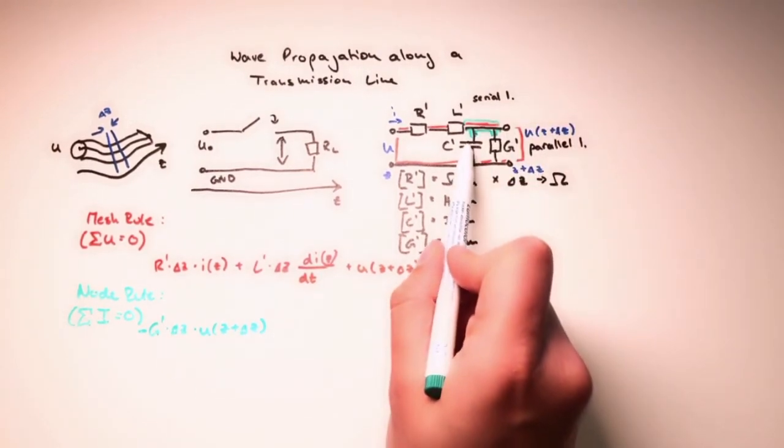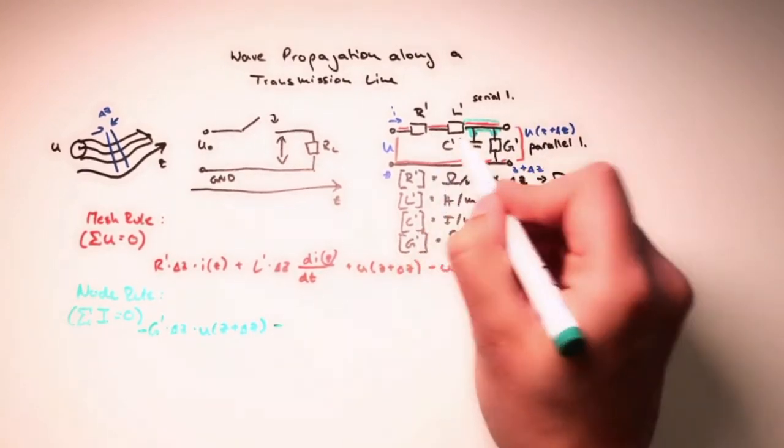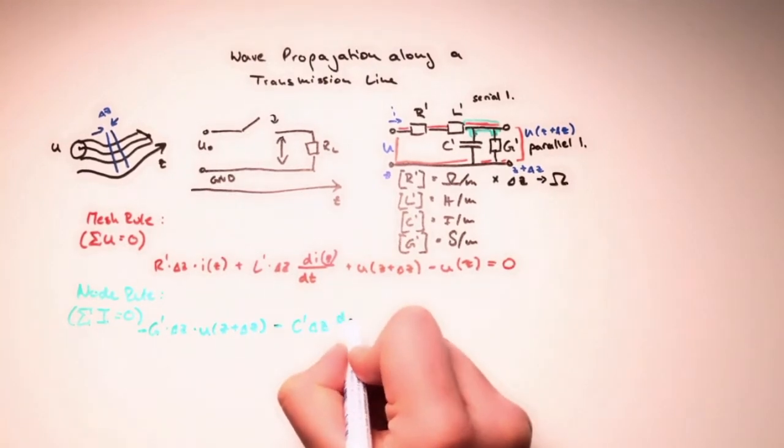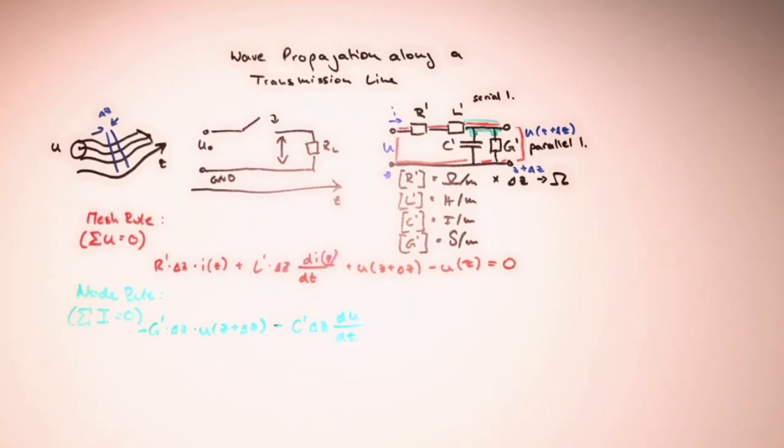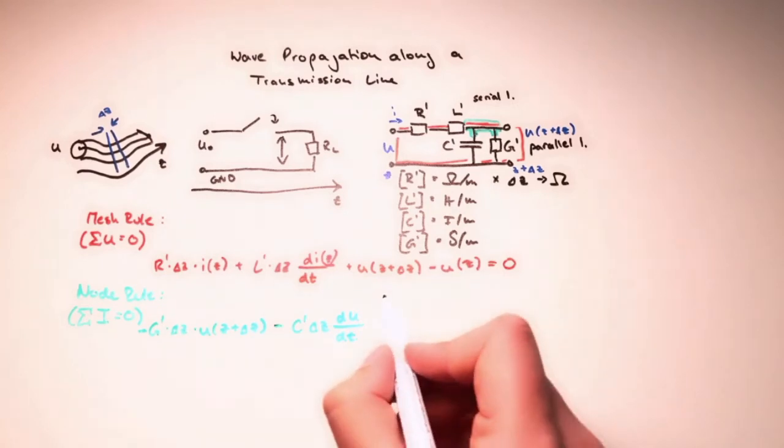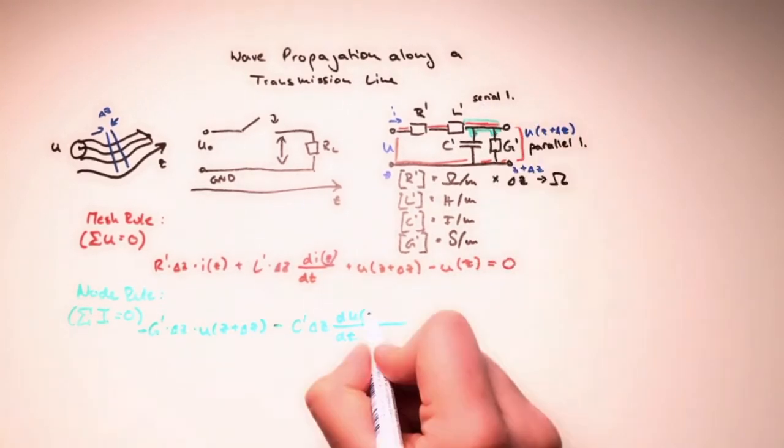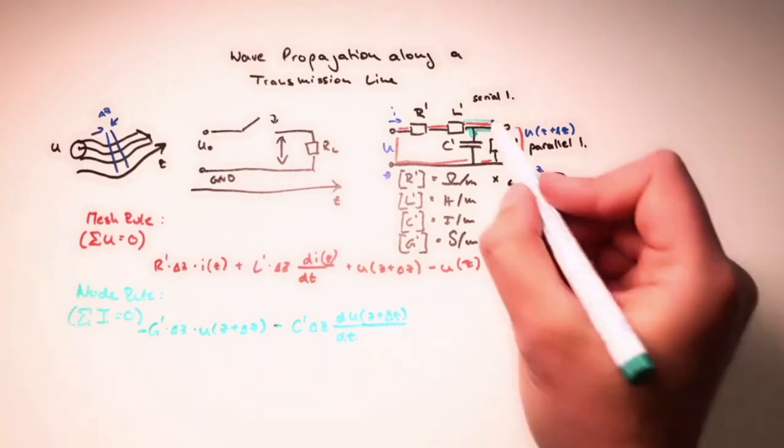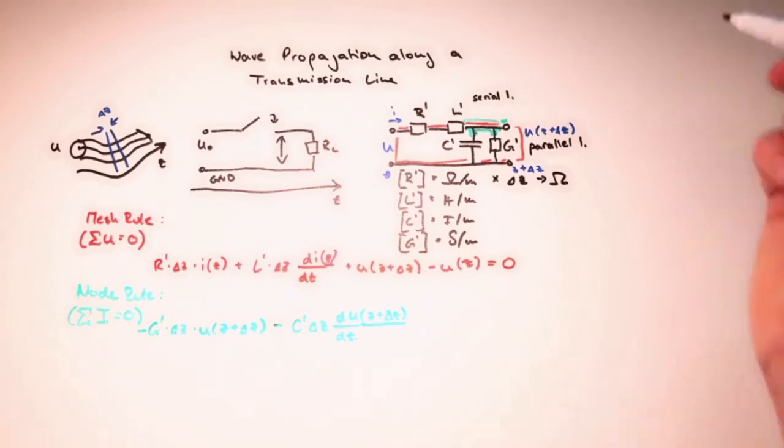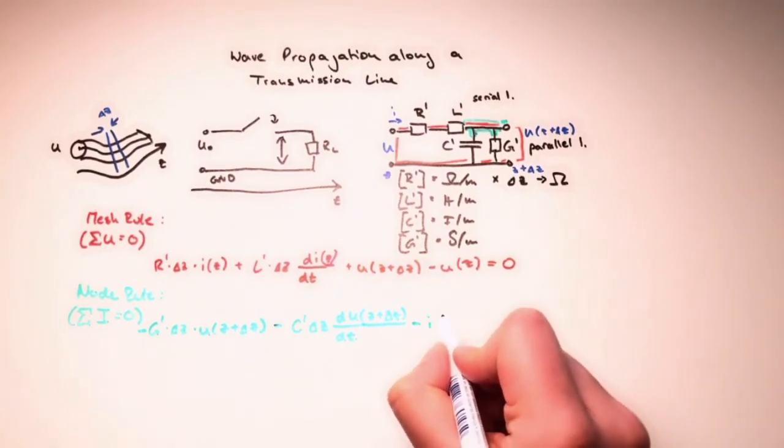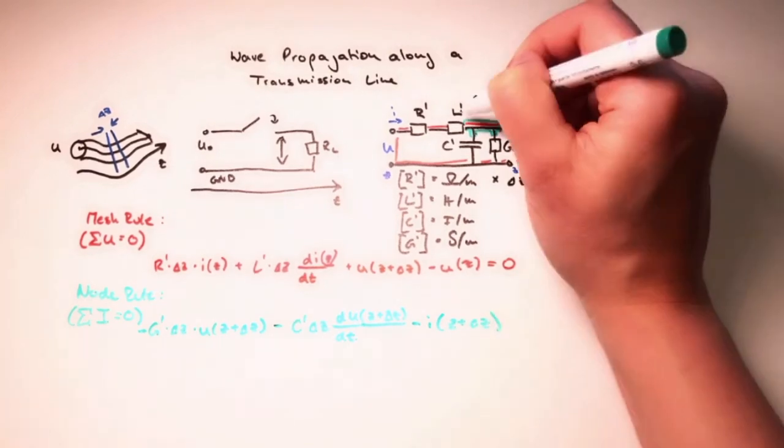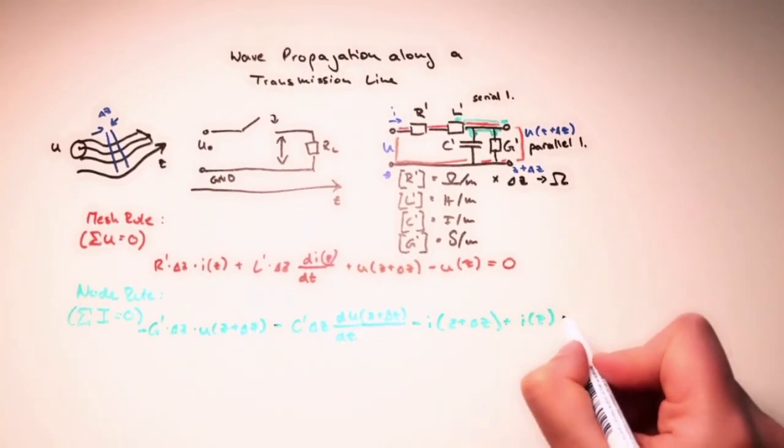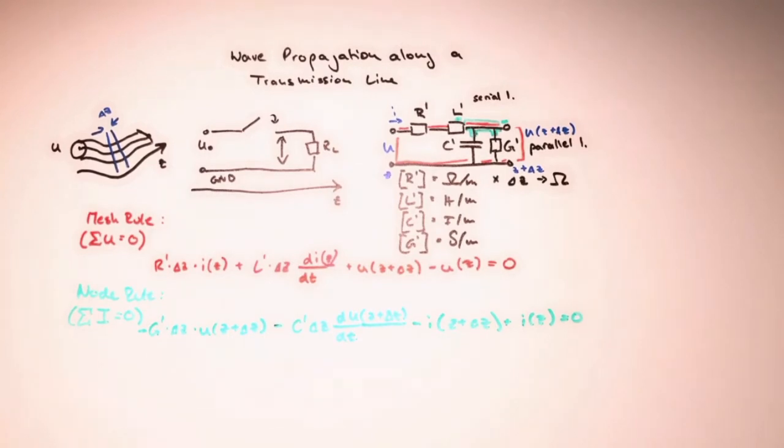Now, what is the current that we need to charge a capacitor? Again, minus because it's going out. Who remembers? It's just the time derivative of the voltage. We got that one. Again, which voltage? Again, at the other side. So z plus delta z. Good. That's our second term. Then we also have some current going in this direction. So we also have to take minus i at position z plus delta z. And finally, we have the current that is going in at the very beginning plus i at z. And all of that has to be zero.